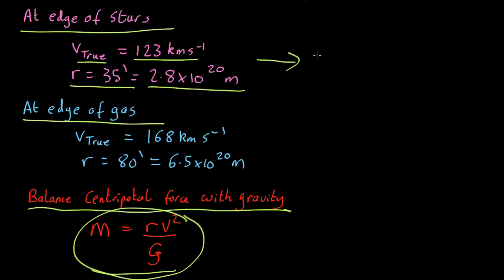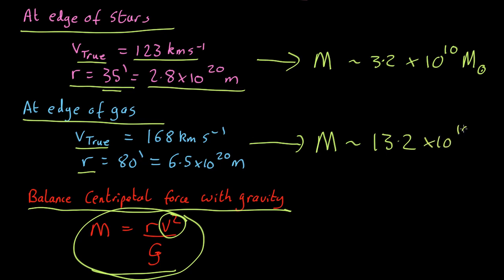And we find here that the mass of the central 35 arc minutes, so that's of the region containing stars, comes out as about 3.2 by 10 to the 10 solar masses. When we go out to the edge of the gas, R is larger and V is larger, so we're going to bound to get a much bigger number, especially because of the increase in V, because you've got a V squared in here. So we end up with a mass of 13.2 by 10 to the 10 M solar. Okay, so there's our answer. Let's go and see what Brian got.